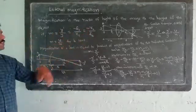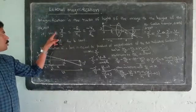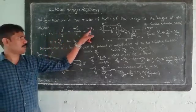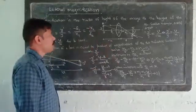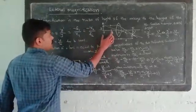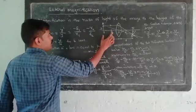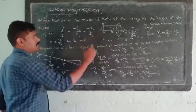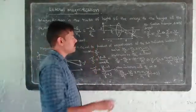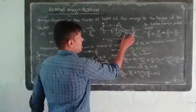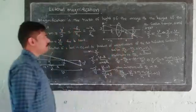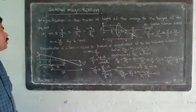So, we will discuss the following: M is equal to y-dash by y, minus F1 by X1 is equal to minus X2 by F2. X1 and X2 are defined as follows: X1 is the object-like distance from the first principal focus, and X2 is the image-like distance from the second principal focus.